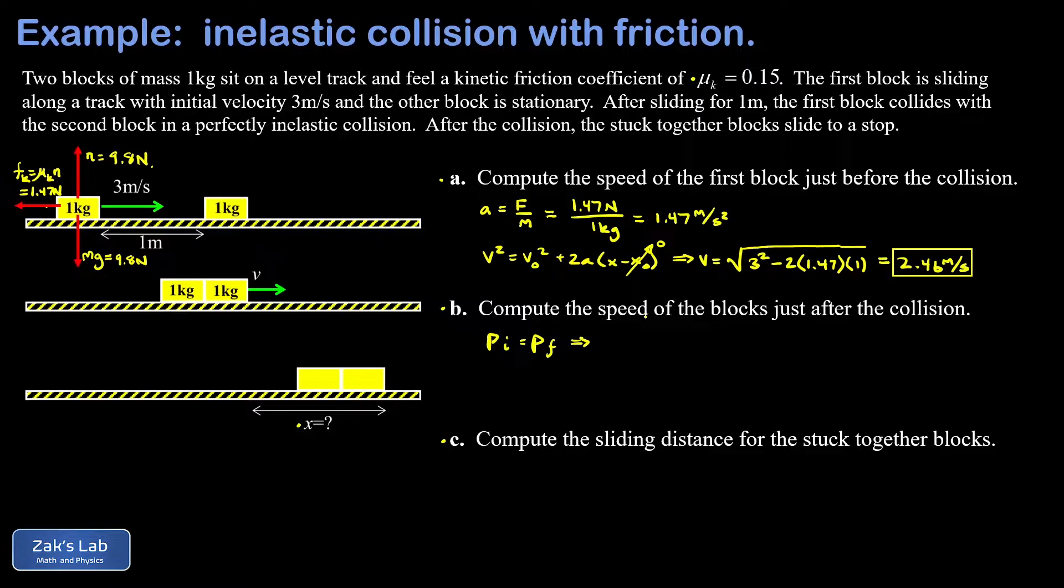So P initial is equal to P final for that instantaneous collision. And our initial momentum just before the collision occurs, that requires the speed we computed in part A. The leftmost block was moving at 2.46 meters per second. So my initial momentum will be the mass of that block times its speed coming into the collision, 2.46 meters per second.